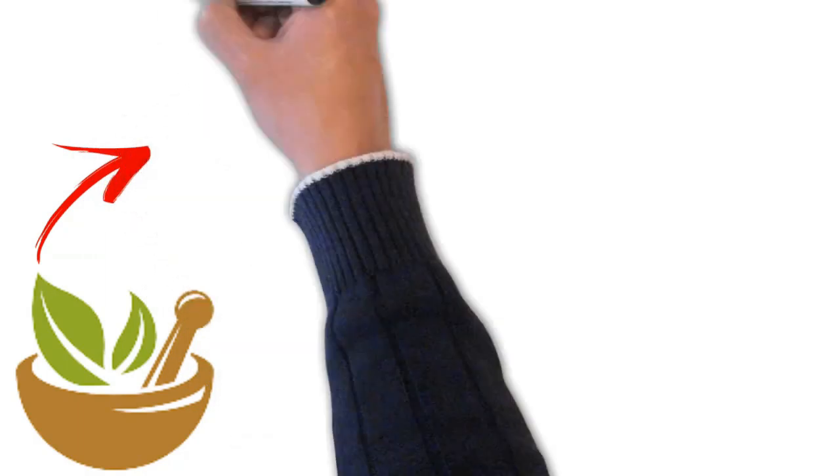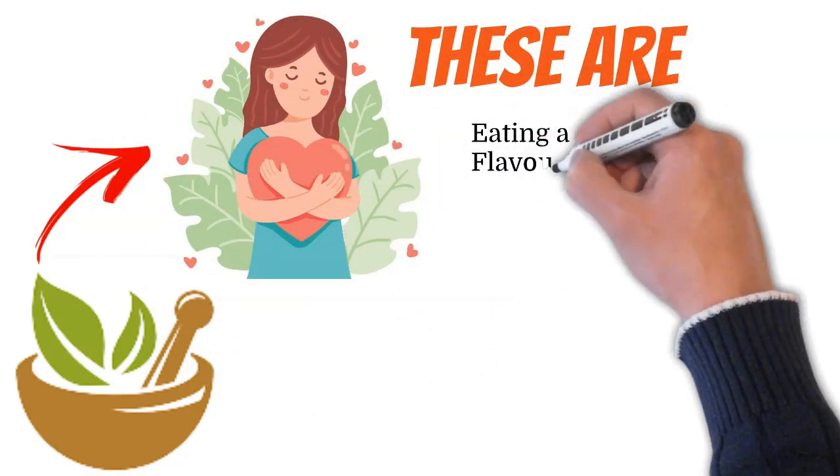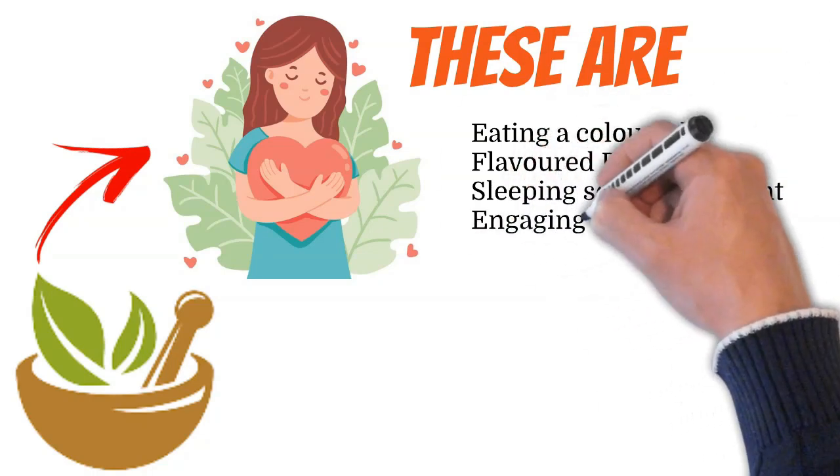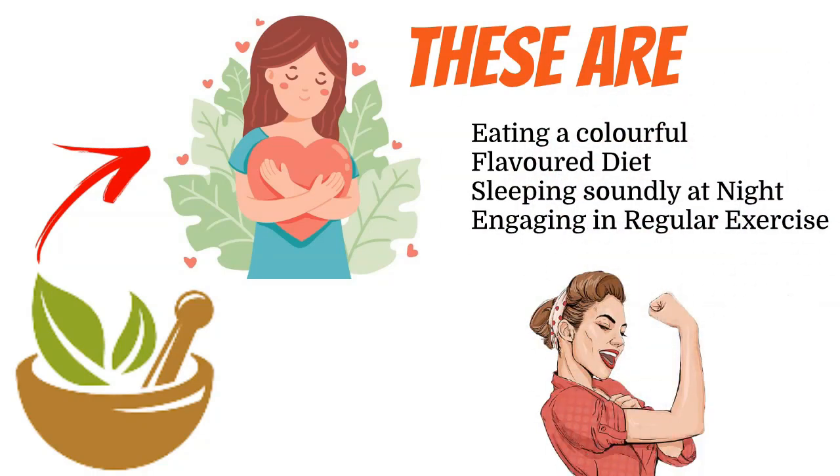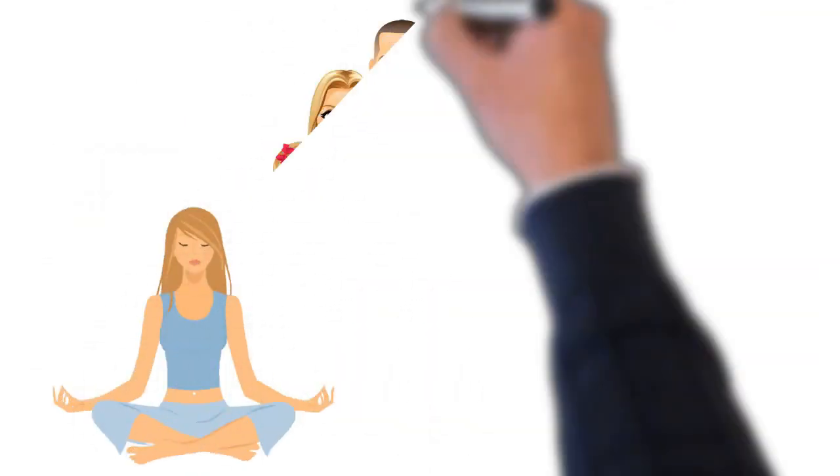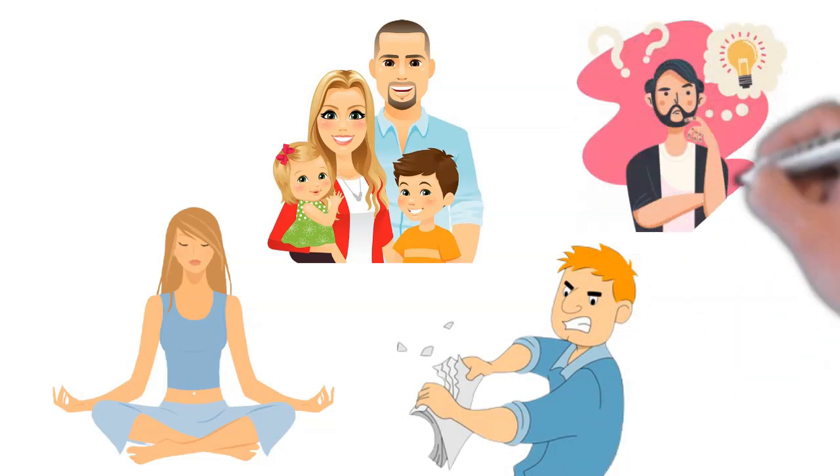Solution. Going back to 7 basics of Ayurveda to find some balance in our well-being. These are: eating a colorful, flavored diet; sleeping soundly at night; engaging in regular exercise that enhances flexibility and strength; taking time daily to quiet our mind; cultivating loving relationships; ending what does not serve us; awakening our passion.